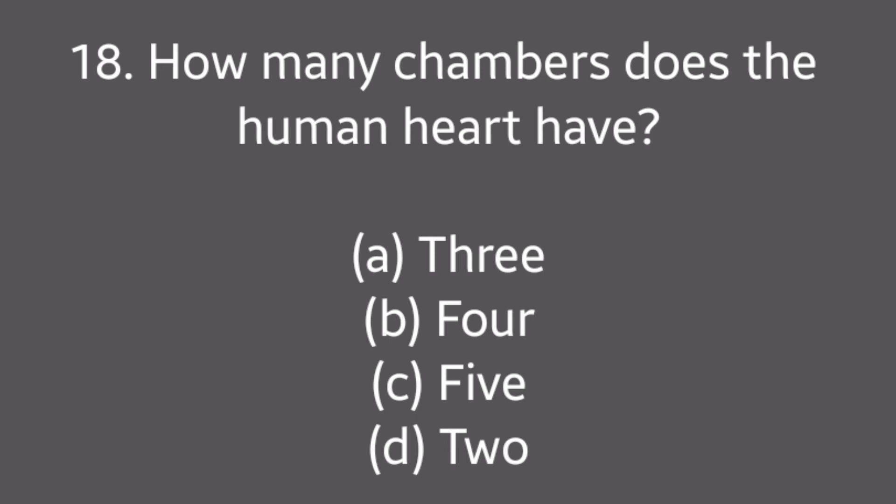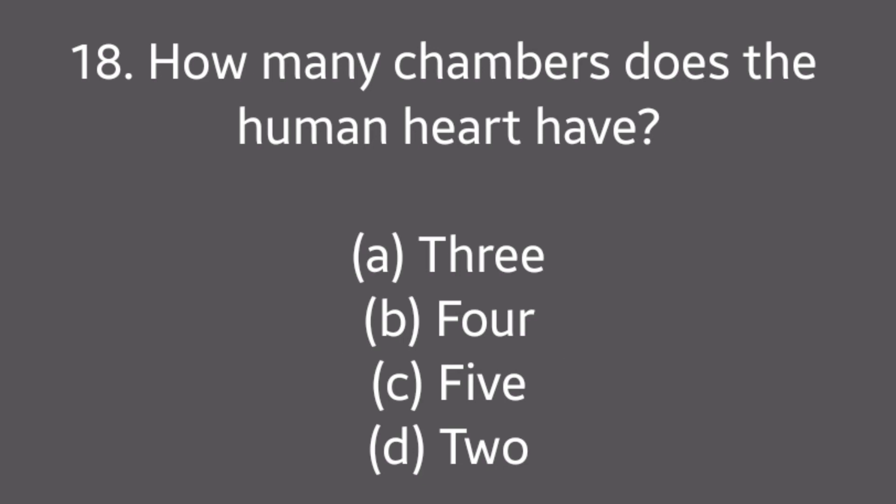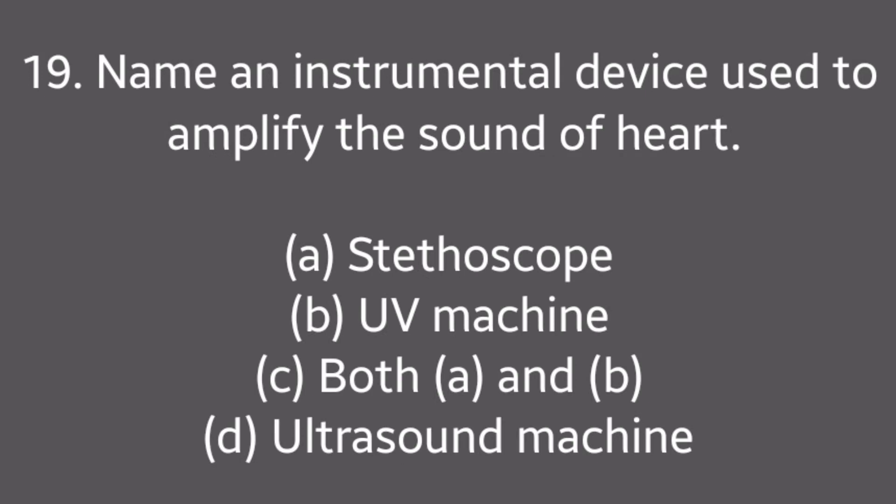Question No. 18: How many chambers does the human heart have? Options: 3, 4, 5, 2. Answer is Option B: 4.